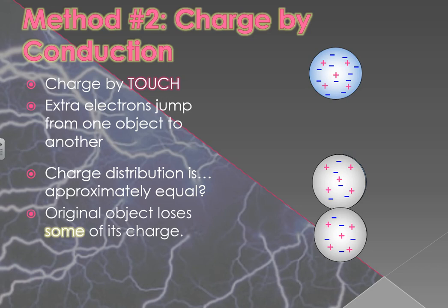The original object loses some of its charge, and that is one of the byproducts of charging by conduction. If you're trying to discharge by conduction, this was exactly what you wanted. You didn't want to lose some of your charge, you wanted to lose all of your charge.